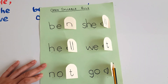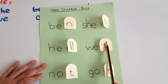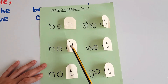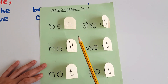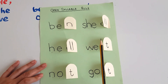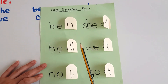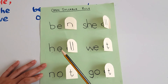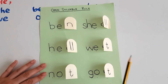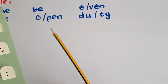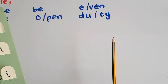This is something you can give your children to help them understand the open syllable rule. We will work only with single syllable words at the beginning, and once the concept is clear, you can go on to disyllabic or trisyllabic words.